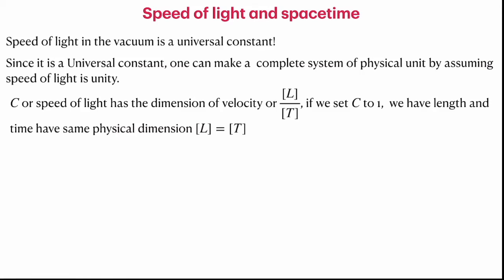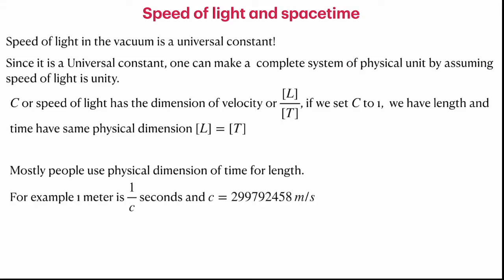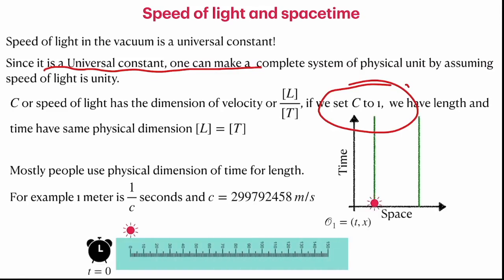In this convention, both time and space are measured in seconds, or equivalently distance can be measured in units of time. As per the current international standard of units, 1 meter is the distance traveled by light in 1/C seconds, where C = 2.99792458 × 10⁸ meters per second. This is a new concept where light is used to measure spatial distance as well, arising from using a universal constant to define the unit.